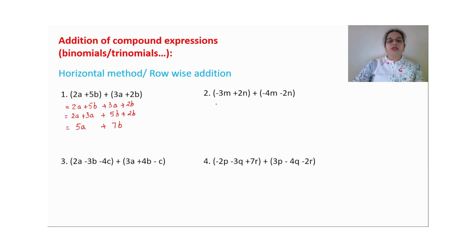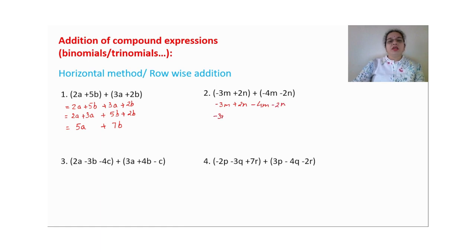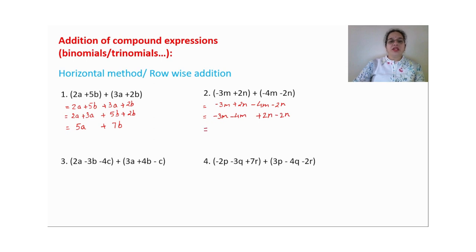Take one more example. When addition is given, first open the brackets. A plus sign does not change any signs inside the brackets — write them as they are. Then write like terms together. So minus 3m and minus 4m are written together; then the other two terms together. Coefficients: minus 3 minus 4 gives minus 7m. Plus 2 minus 2 gives 0, and 0 multiplied by n is 0. So this is the answer.